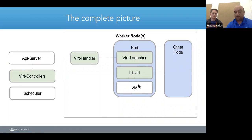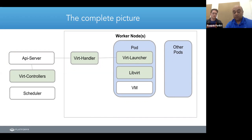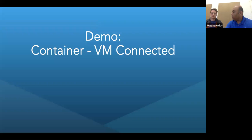Here's the complete picture, simplified: the API server and controllers act on objects, communicating with virt-handler to launch pods, which are controlled primarily by virt-launcher with libvirt as the underlying subsystem that creates VMs. Other parts are controlled by kubelet along with the scheduler and API server. Because VMs are just pods, the scheduler requires no changes - it just looks at resource constraints and schedules accordingly, supporting affinity and anti-affinity policies.